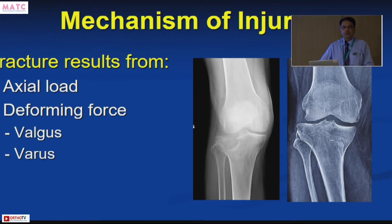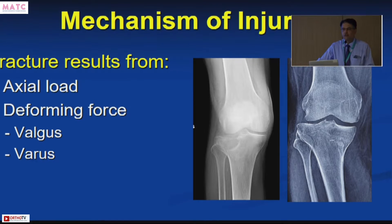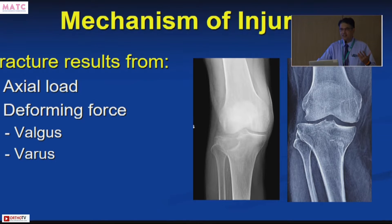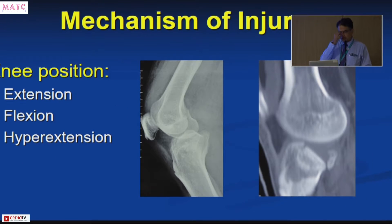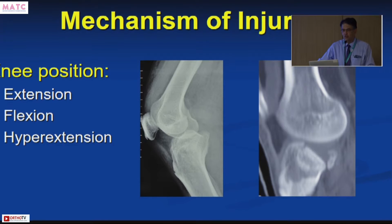Regarding the mechanism of injury, we previously knew it was an axial load on the knee with a deforming force — either varus or valgus — because at that time our understanding was two-dimensional; we were only looking at AP X-rays. With time, we have realized that not only the varus or valgus force but also the position of the knee when these injuries occur will have a great impact on the kind of fracture patterns seen.